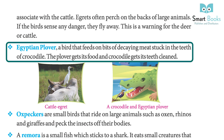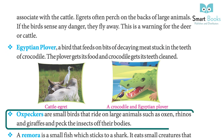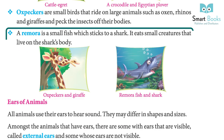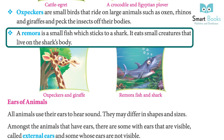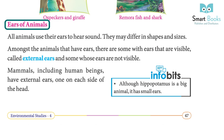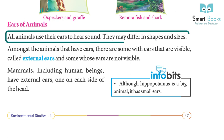The Egyptian plover is a bird that feeds on bits of decaying meat stuck in the teeth of a crocodile — the plover gets its food and the crocodile gets its teeth cleaned. Oxpeckers are small birds that ride on large animals such as oxen, rhinos, and giraffes, and peck the insects off their bodies. A remora is a small fish which sticks to a shark and eats small creatures that live on the shark's body.